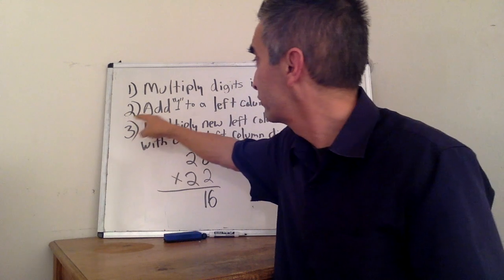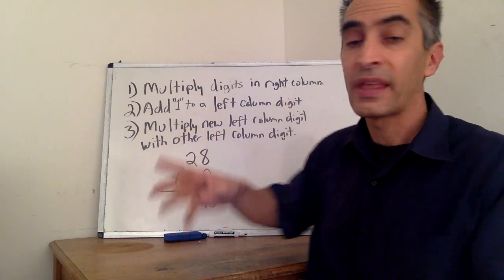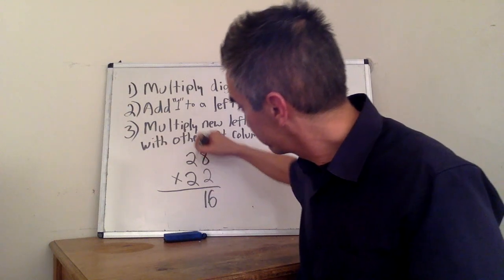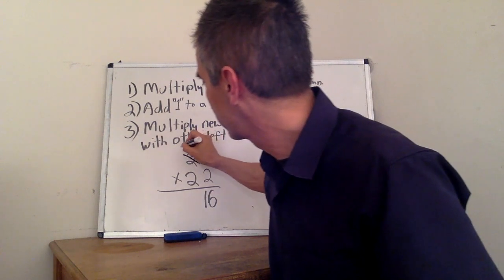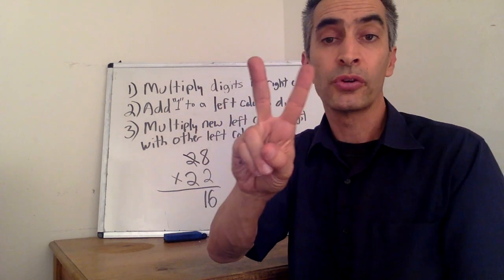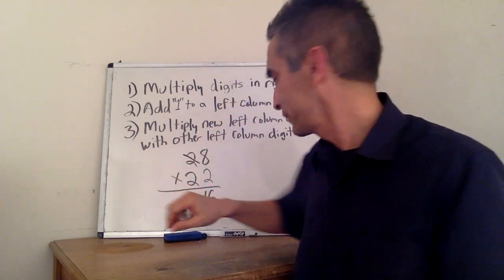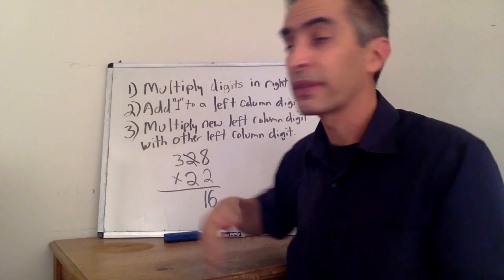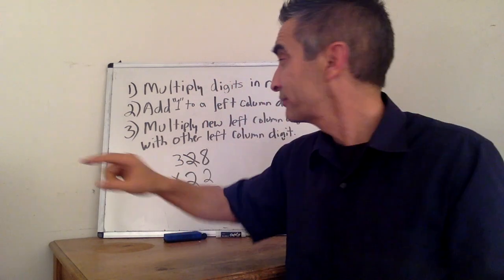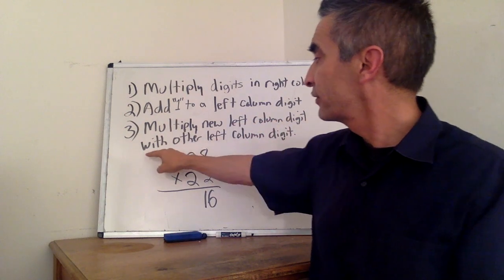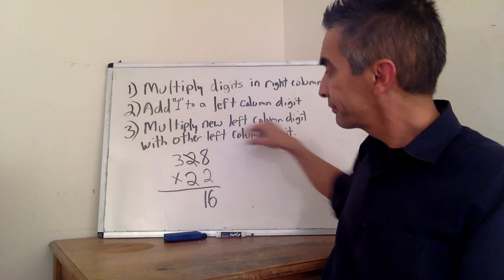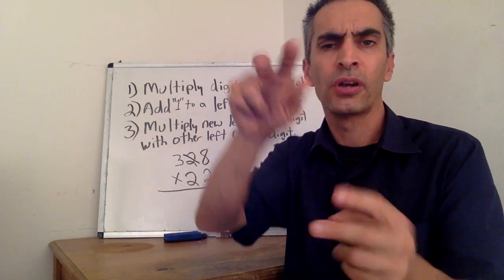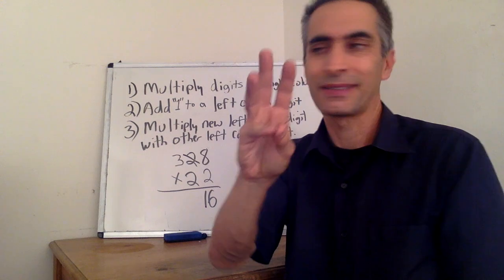Next, add 1 to a left column digit. 2 plus 1 equals 3. Next, multiply the new left column digit with the other left column digit. 3 times 2 equals 6.